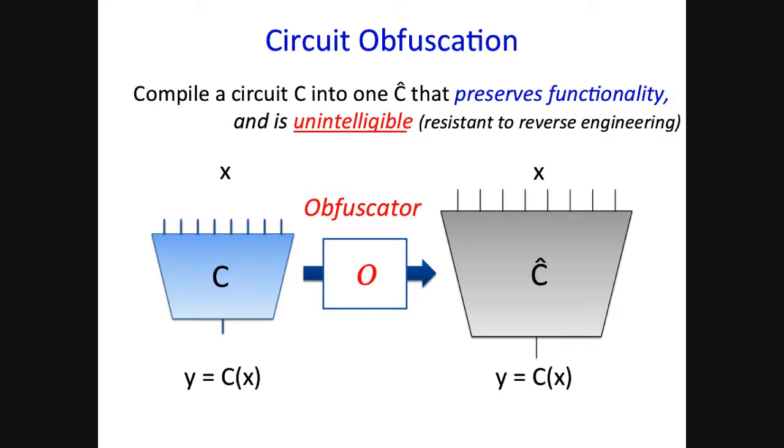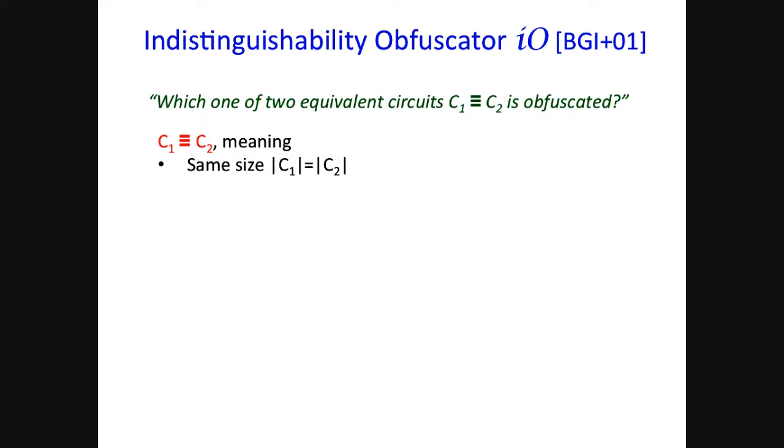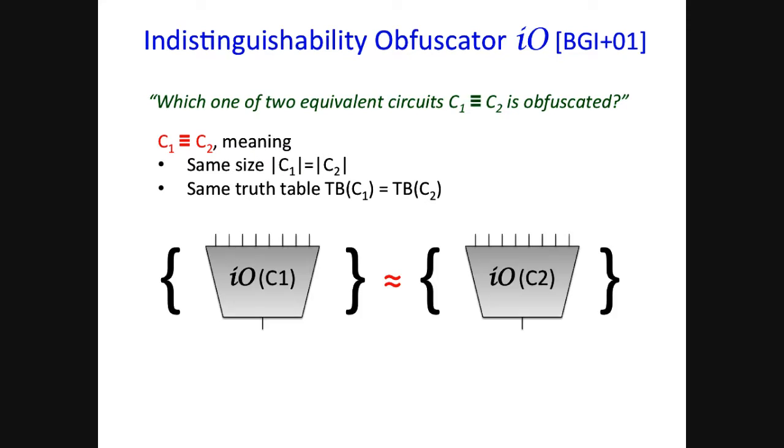And in particular, different notions in the literature have been trying to formalize what exactly this unintelligible means. And they capture different levels of security. What we look at here today is really the weakest notion called Indistinguishability Obfuscation, or simply IO. IO tries to hide just one bit of information. That is, which one of the two equivalent circuits, C1 and C2, is being obfuscated here. By equivalence, we mean that those two circuits really have the same identical size as well as the same truth table. And for such two circuits, we require that IO of obfuscated compiled circuits to have computationally indistinguishable distributions.